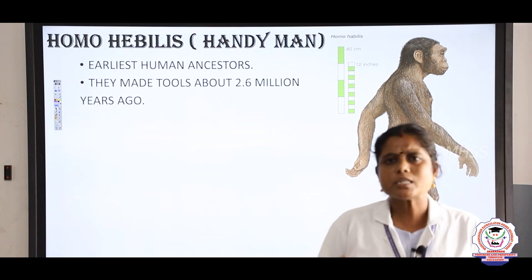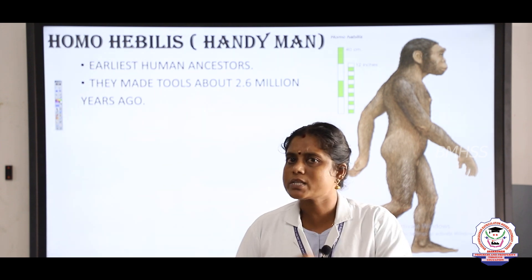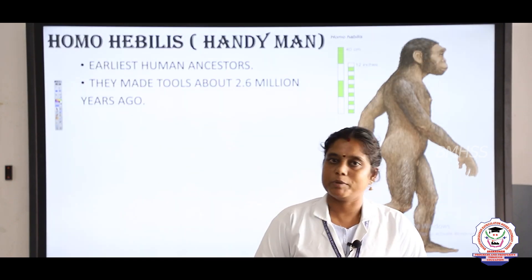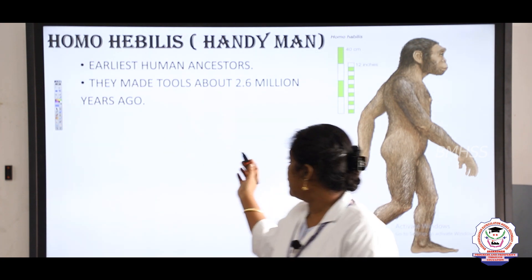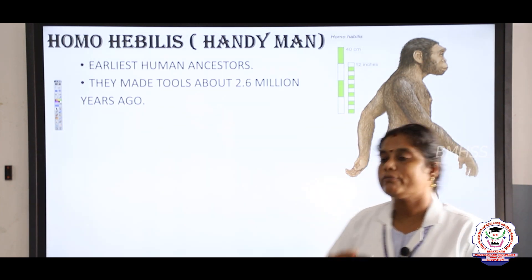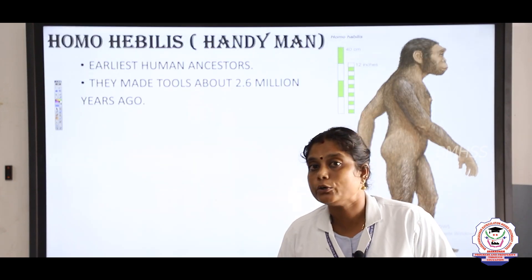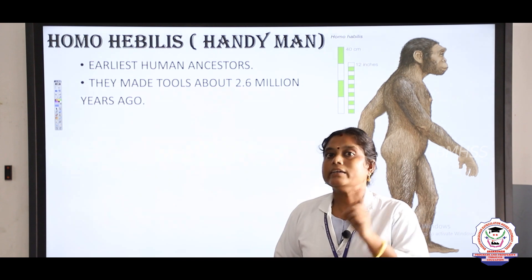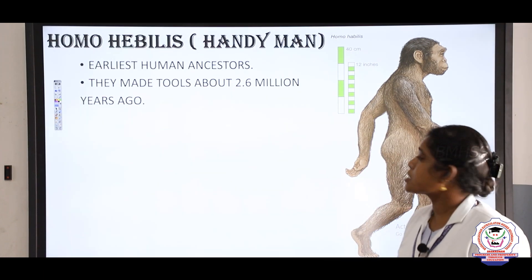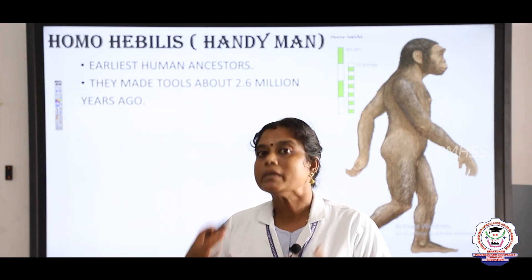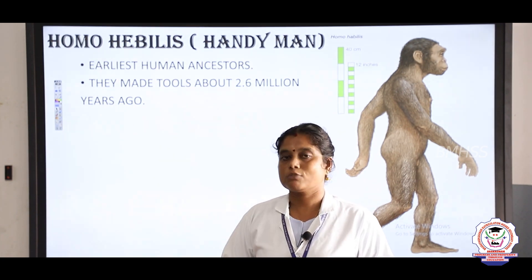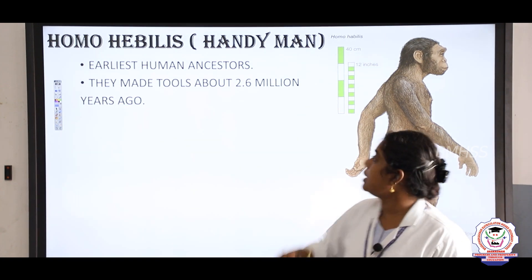Next, Homo habilis — this species had another name: 'Handy Man.' Homo habilis were one of our very earliest human ancestors. They made tools about 2.6 million years ago — weapons to protect themselves from animals. That is the very remarkable species known as Homo habilis.